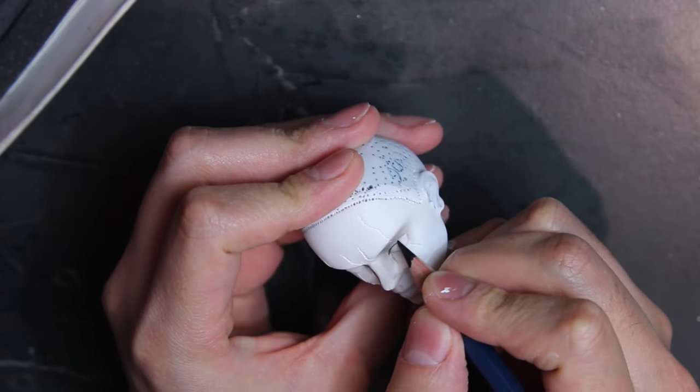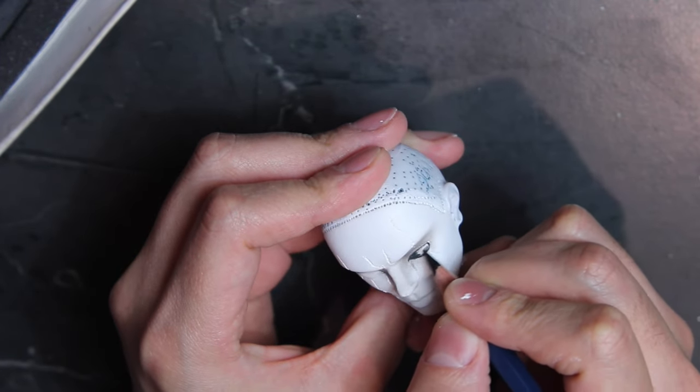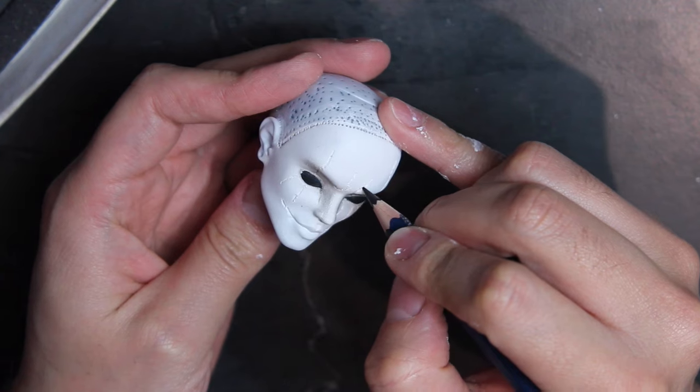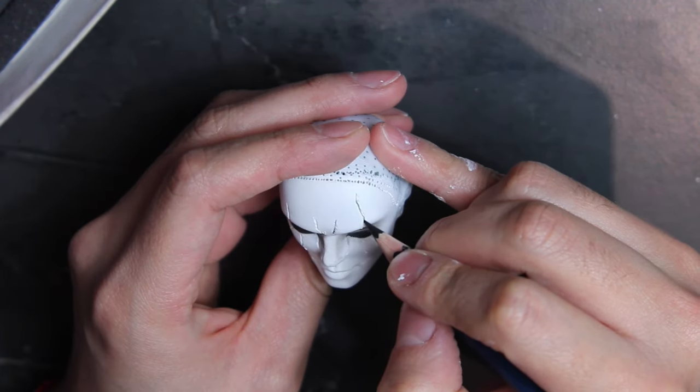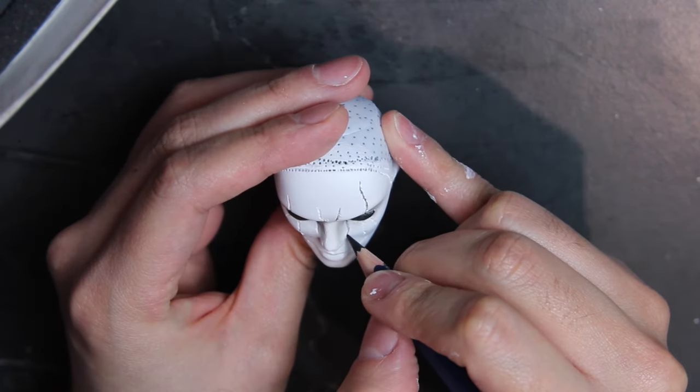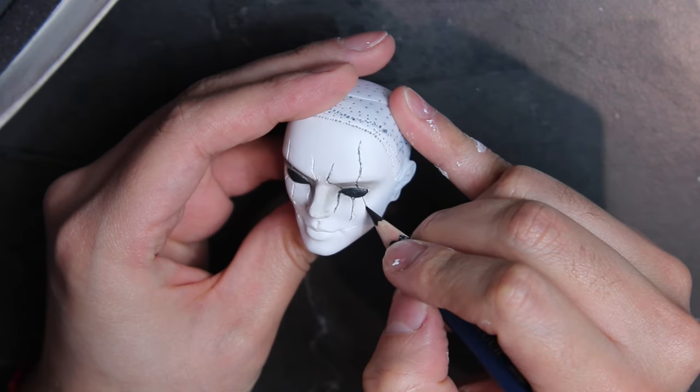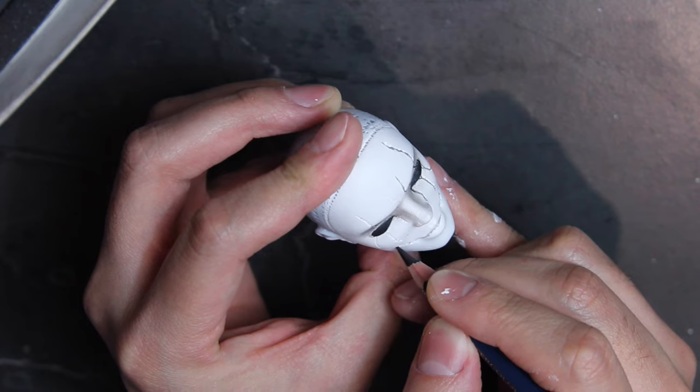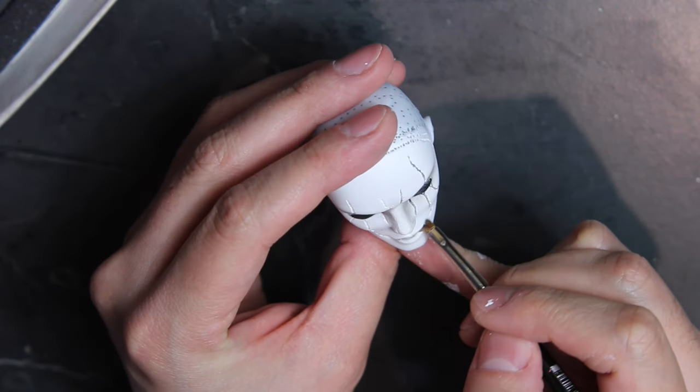And now with black pencil, I'm filling the eyes. And then fill the cracks I previously made. I wanted the cracks to have dimension, other than just being painted on. And add black pastel on the lips.